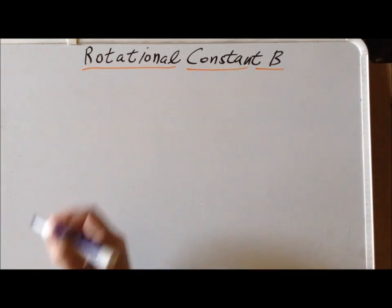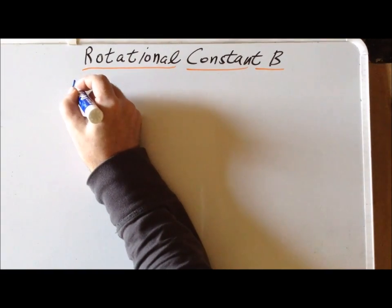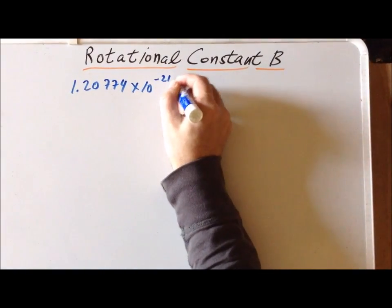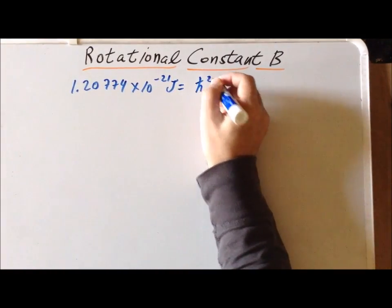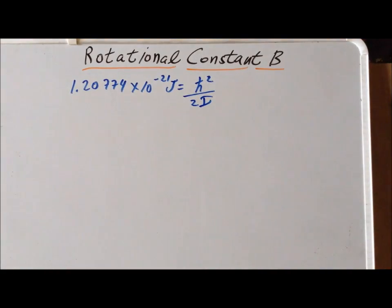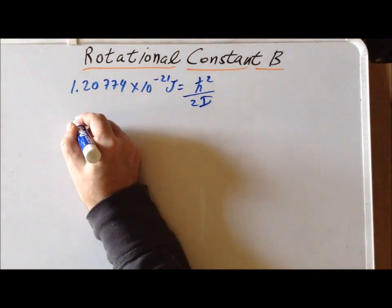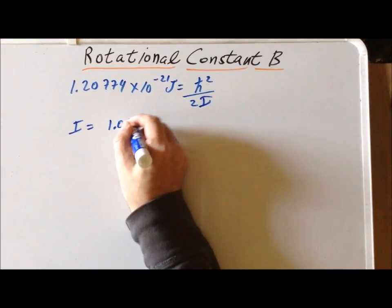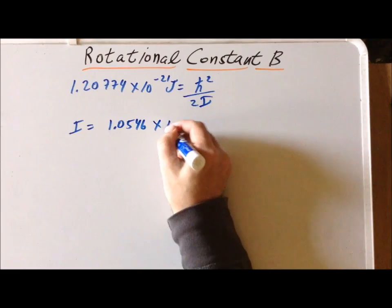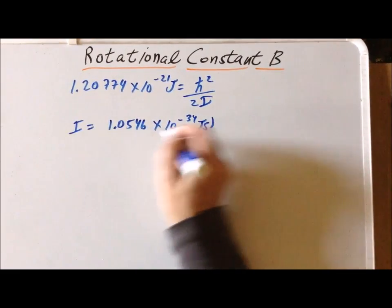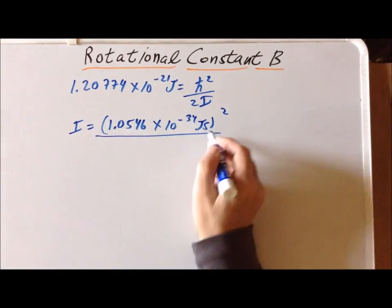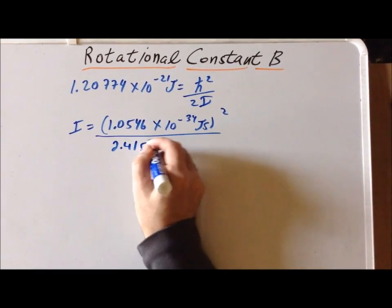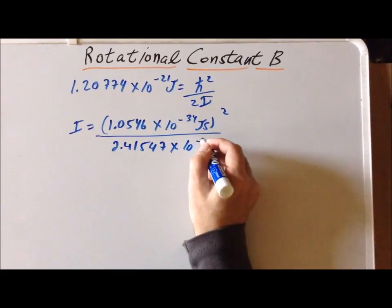Next, we set the energy value of the rotational constant B, 1.20774 times 10 to the minus 21 joules, equal to h-bar squared divided by 2I. So we can rearrange this expression to solve for the moment of inertia I. We take h-bar squared, which is 1.0546 times 10 to the minus 34 joule-seconds, squared, and divide it by 2 times this energy, which is 2.41547 times 10 to the minus 21 joules.